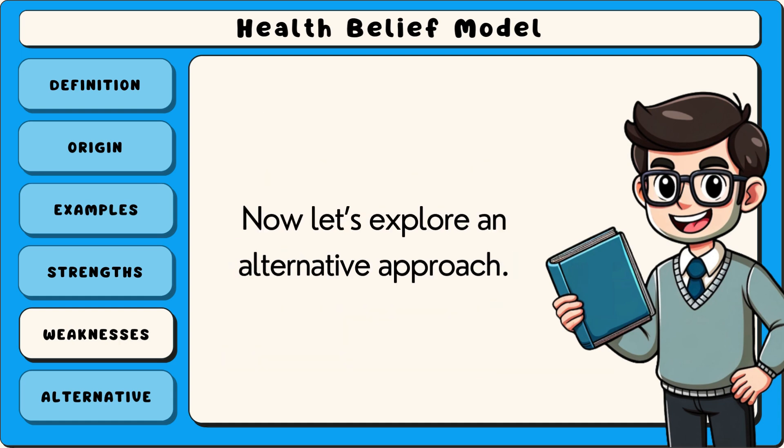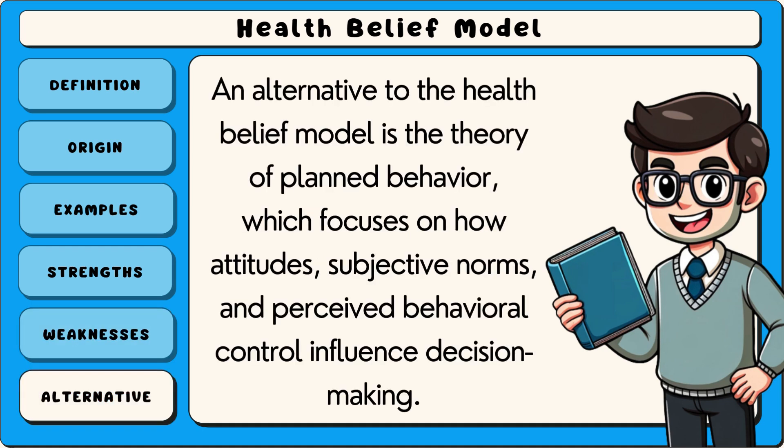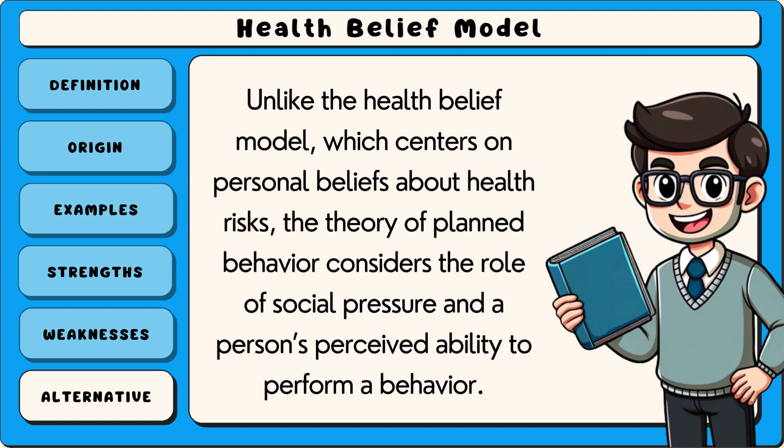An alternative to the health belief model is the theory of planned behaviour, which focuses on how attitudes, subjective norms and perceived behavioural control influence decision-making. Unlike the health belief model, which centres on personal beliefs about health risks, the theory of planned behaviour considers the role of social pressure and a person's perceived ability to perform a behaviour.